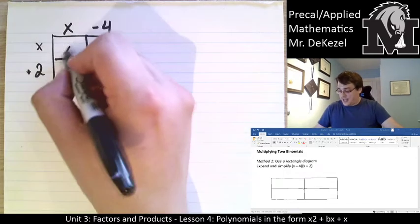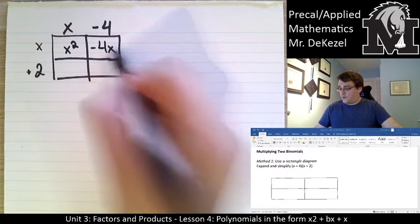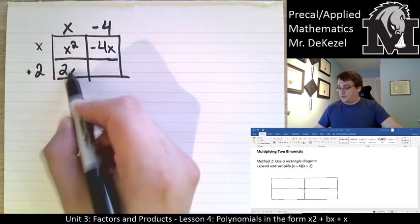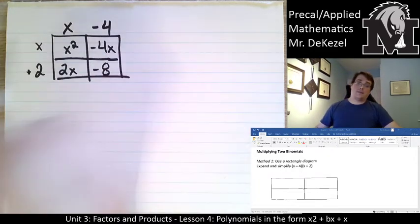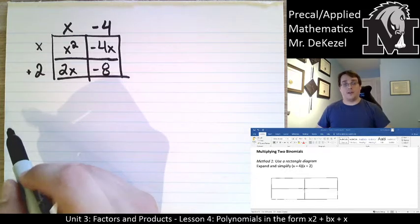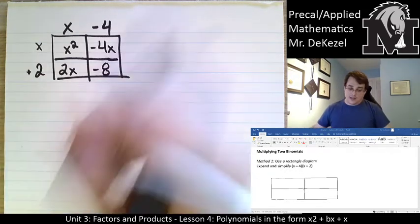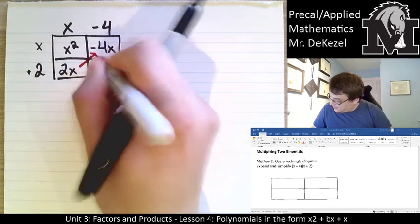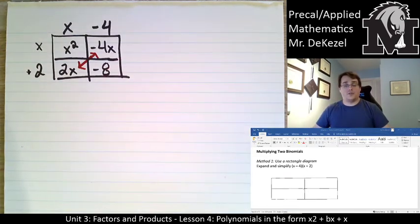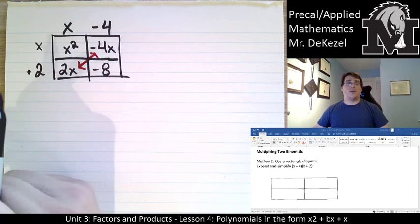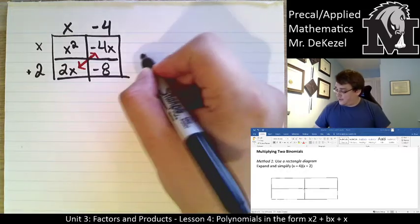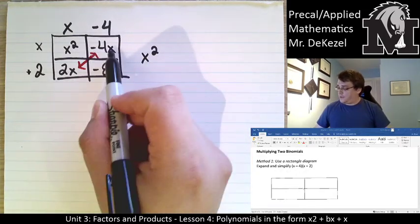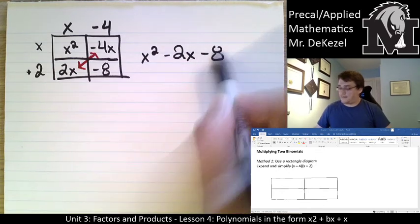So x times x is x squared. x times minus 4 is minus 4x. 2 times x is 2x. And in this box, 2 times minus 4 is minus 8. So these are my four pieces that I'm going to need to put together. And you'll notice that the boxes that are diagonal here, they have like terms, so you can combine them. That's not true for the other diagonal, but there are going to be generally two boxes that are the same terms so you can combine.